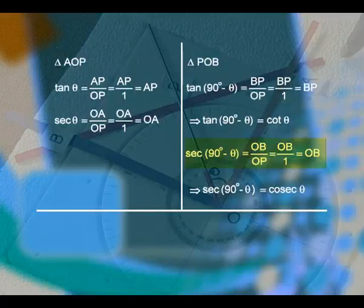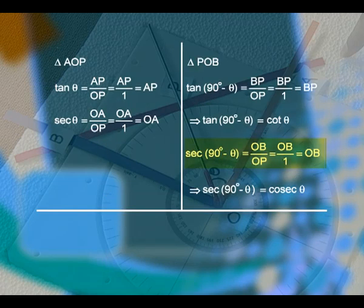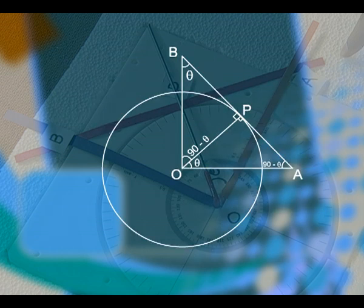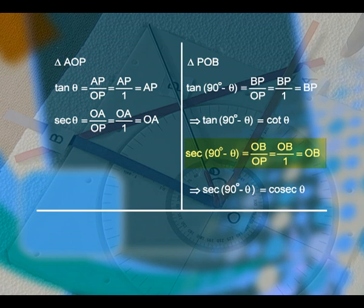Now, we take secant(90 minus theta) in the same triangle P, O, B. The theta is here, and secant(90 minus theta) is hypotenuse by adjacent side. It is OB by OP, equal to OB by 1, equal to OB. OB is nothing but our cosecant theta. So, secant(90 minus theta) is equal to cosecant theta.